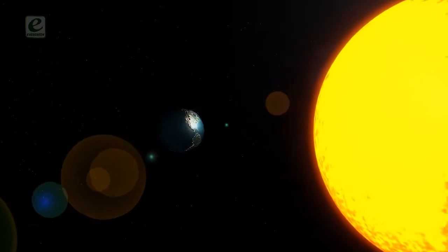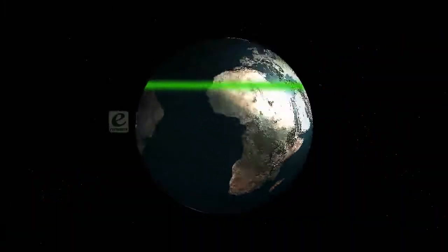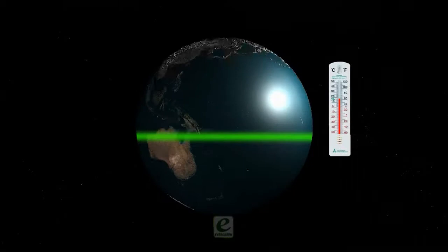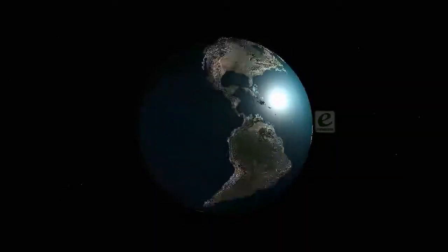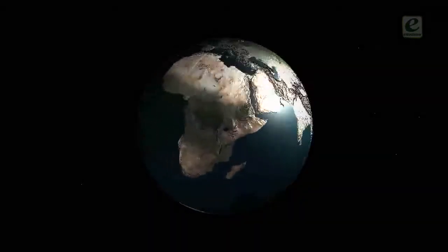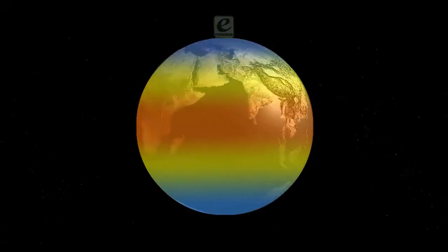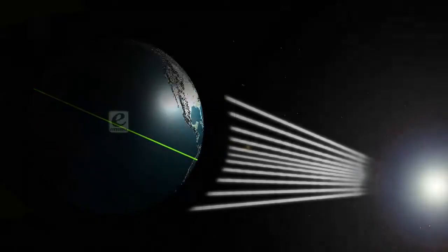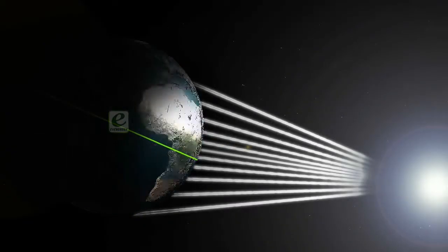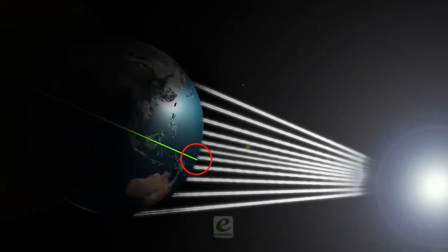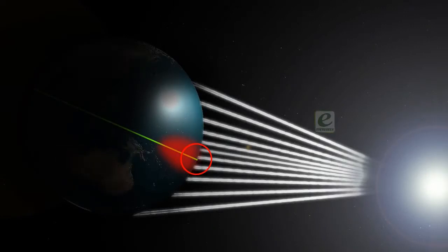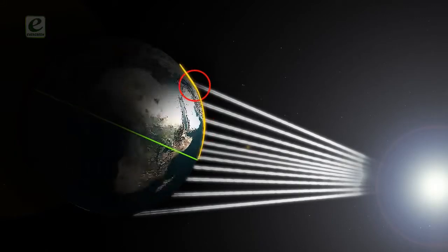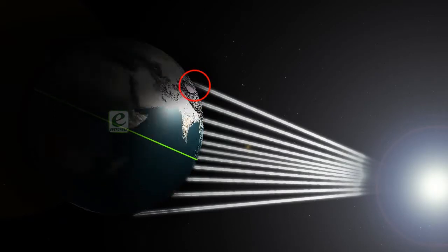The latitude at which a place is located affects the temperature of the place. The spherical shape of the earth causes different parts of the earth to be heated at different degrees. The regions near the equator get more direct rays of the sun. The direct rays are concentrated over a small area, so they heat up the earth more. As we move away from the equator, due to the curvature, the sun's rays strike the earth at an angle.